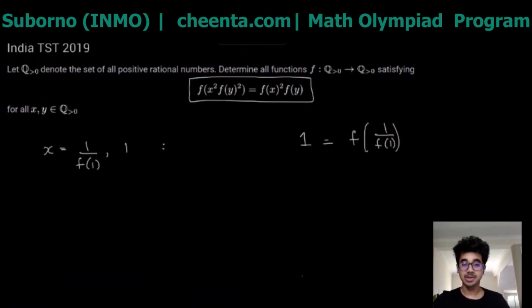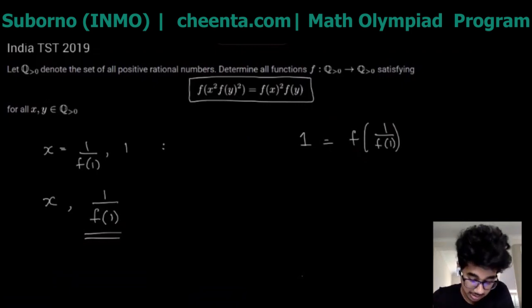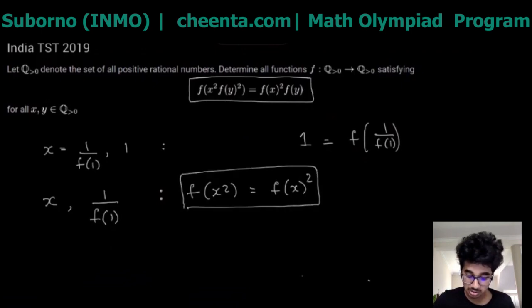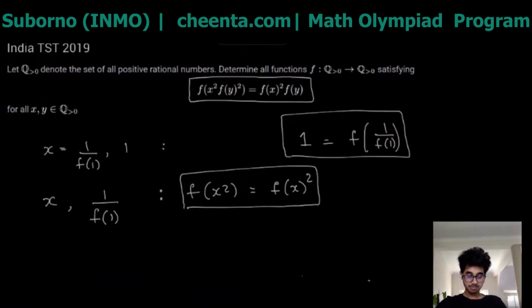Okay, so plugging this value gives us a very interesting result, that f of something - this value - is equal to 1, and we are going to use this. Next, let's try and plug in more values. We can try and plug in x and 1 divided by f(1), and this is because we know that f(y) in this case would be nothing but just 1. So in the entire equation we can replace f(y) by 1.